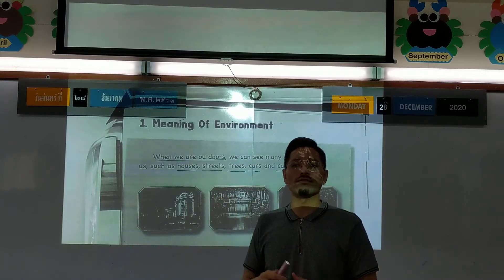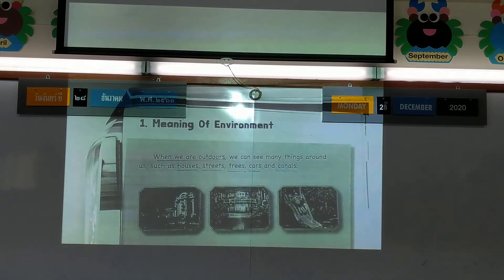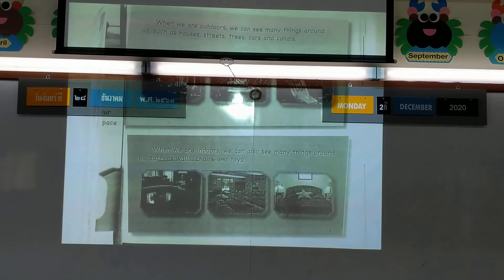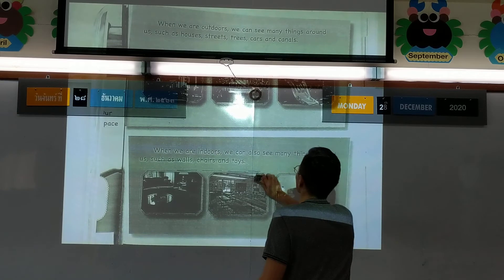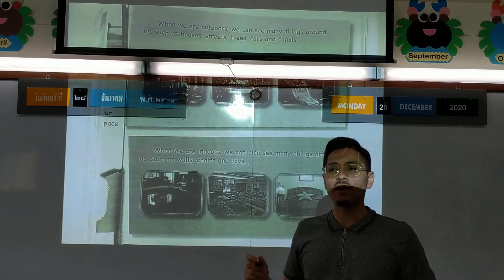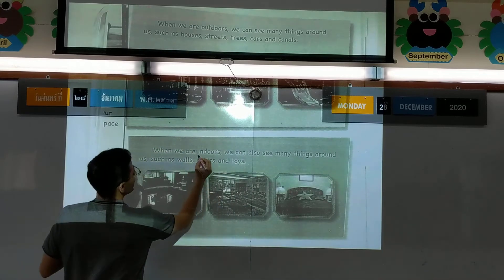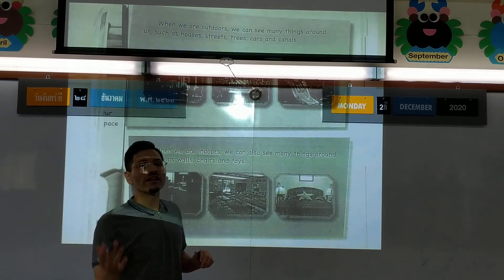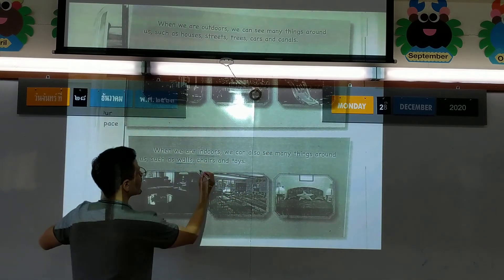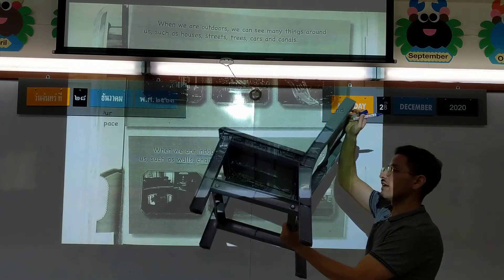That is the school environment. You can pause it and copy. Now I'm going to move on. The first one was outdoors - the outdoor environment. Now we'll talk about indoors, like school or your house. When we go inside, we can see the walls and chairs - here's a chair at school.